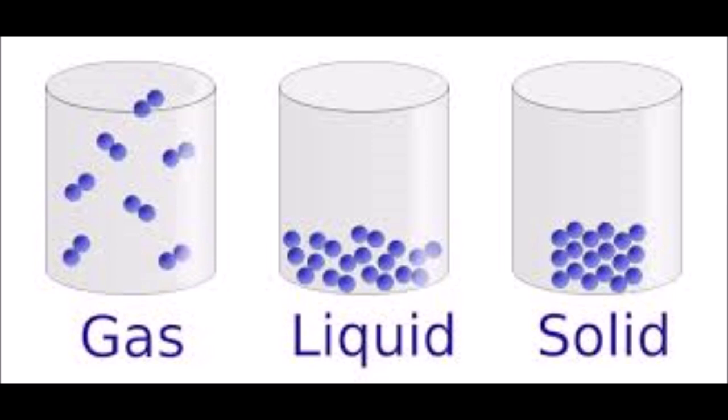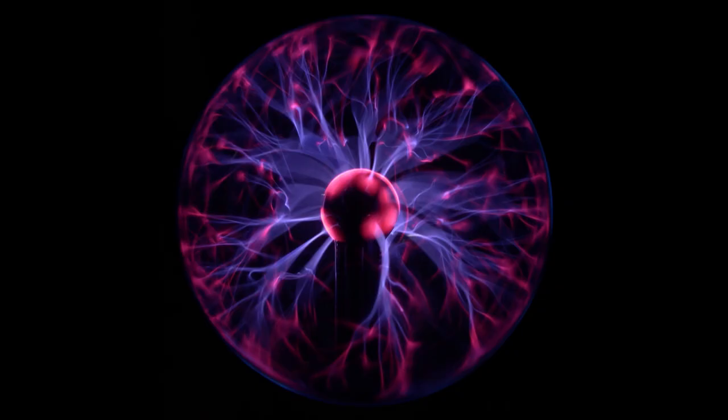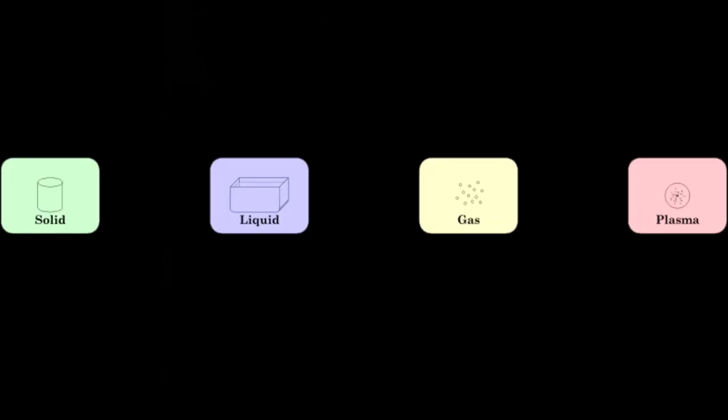Particles packed together — solid holds their shape, but not forever. Liquid particles flow freely. Gases have high kinetic energy. Vibrating molecules spread all apart. Plasma has a negative charge. Energy — make it work, change it up. Now you know what's up. I got matter on my mind, gonna change four times — all made of mass, matter, shape, or size.